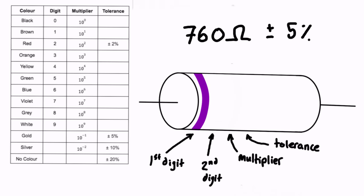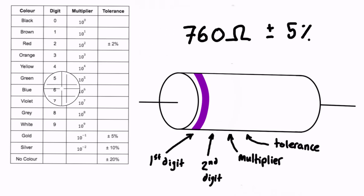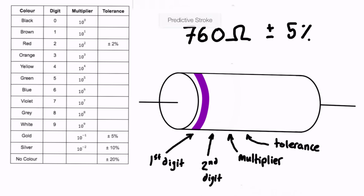Our second digit is 6, so we look and see where is 6 in our digits — 6 corresponds to blue. So we can put in a blue color band for the second band.